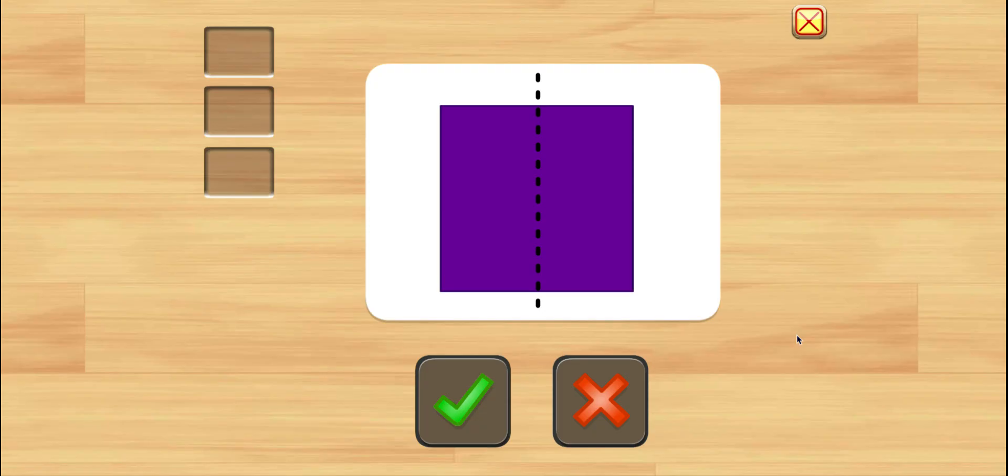Is this picture symmetric? Hmm, let's look at the picture. Here, I see a purple square. And now let's compare sides. If we look down this line, it divides it in two. This side is the exact same as this side. Awesome! It's symmetric. Yes.